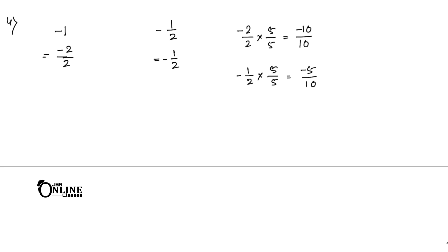Now find four rational numbers between -10/10 and -5/10. Your answers are -6/10, -7/10, -8/10, and -9/10.